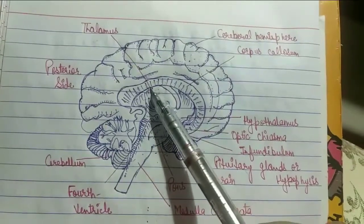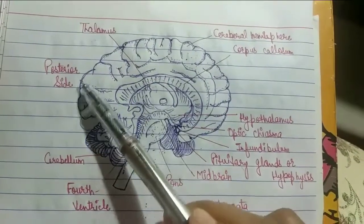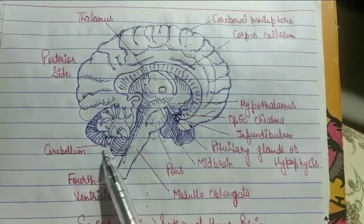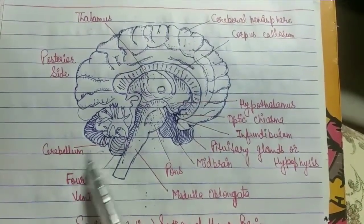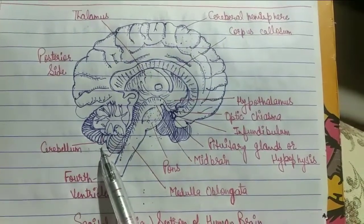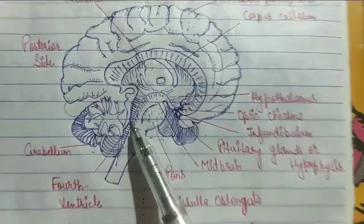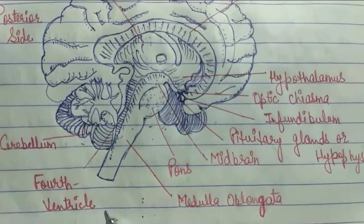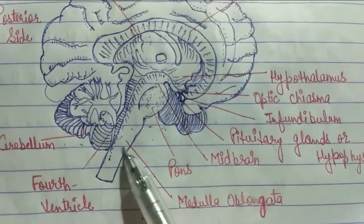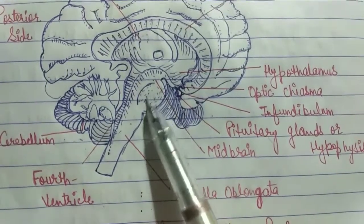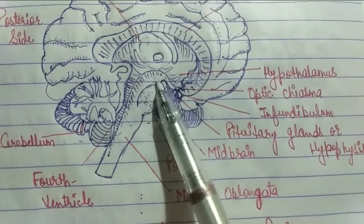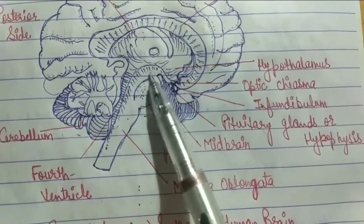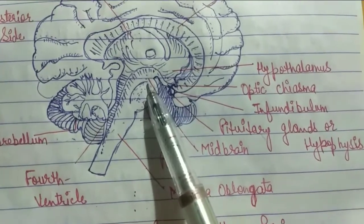This portion is our thalamus — this is the posterior side. This is our hindbrain cerebellum, which controls movements and posture. This is the fourth ventricle, and this is the medulla oblongata. This portion is the midbrain, which controls eye and hearing responses.